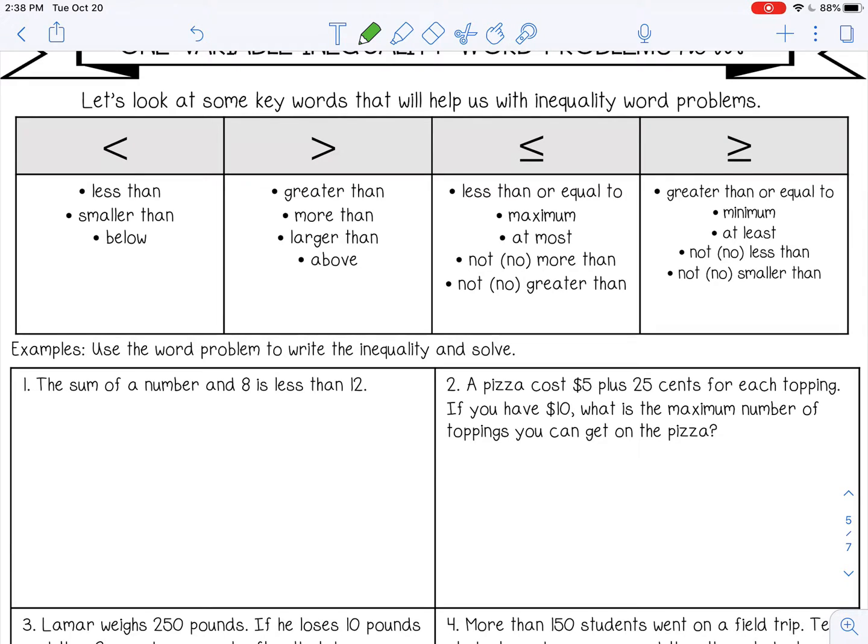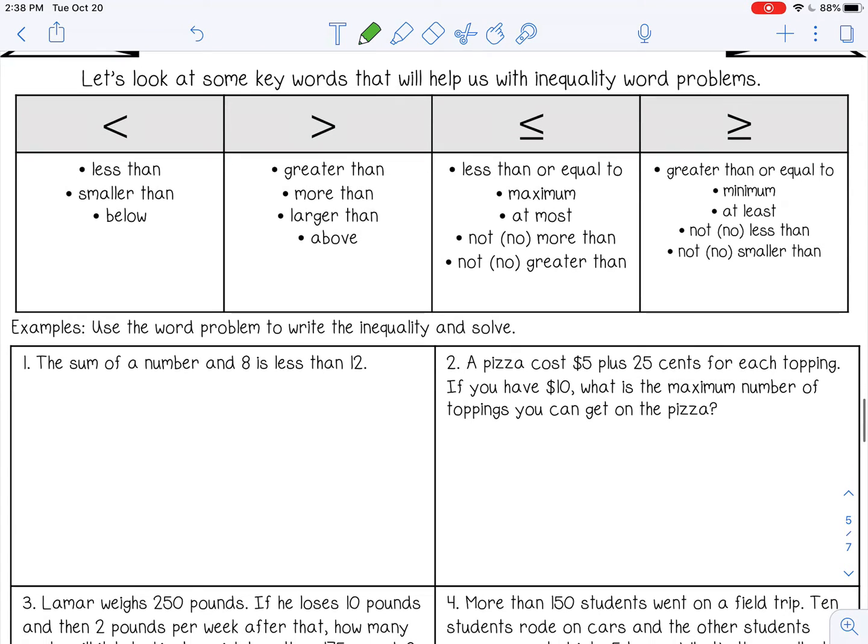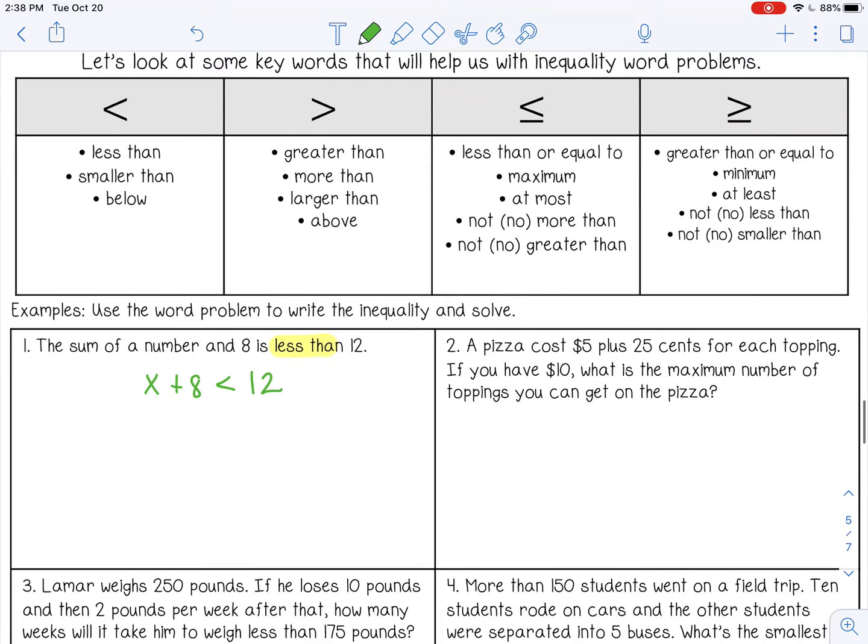So let's go ahead and do the examples. Number one, the sum of a number and eight is less than 12. So less than, that's right here. The sum of a number and eight, so sum means to add, so we have a number plus eight is less than 12. And then once you have your inequality set up, all you have to do is solve. So subtract eight, x is less than four.